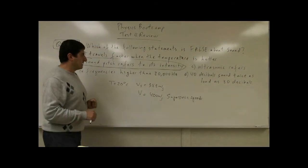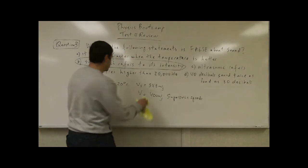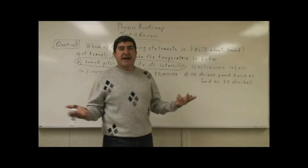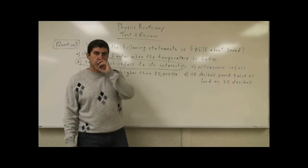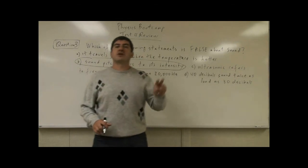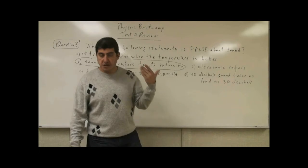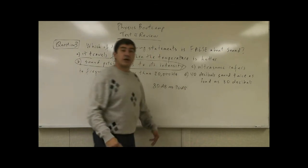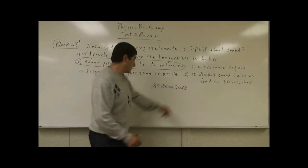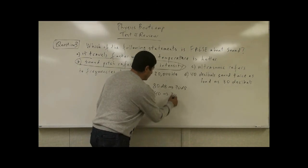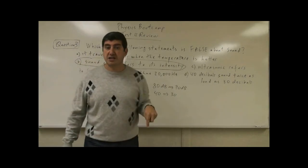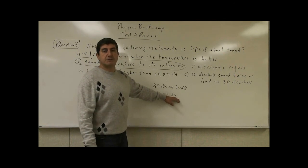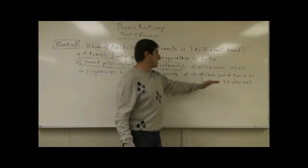Option D: a 40 decibel sound sounds twice as loud as a 30 decibel sound. This is a generally accepted fact — there's no strict mathematical equation, but it's accepted that when two sounds are separated by a 10 decibel interval, the human ear perceives that as twice as loud. Note that 40 dB has 10 times the intensity of 30 dB, but 10 times the intensity does not translate to 10 times louder. It sounds twice as loud.